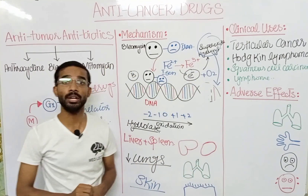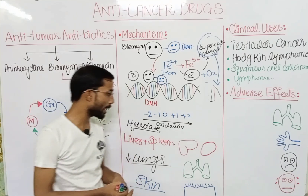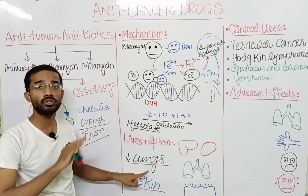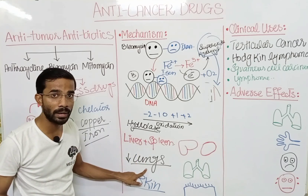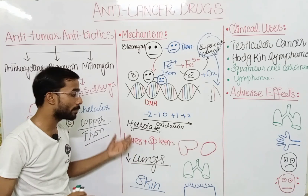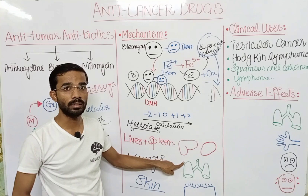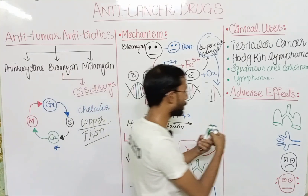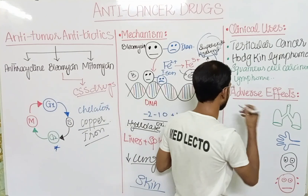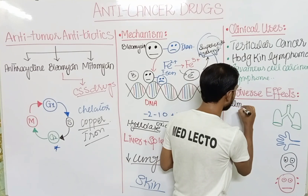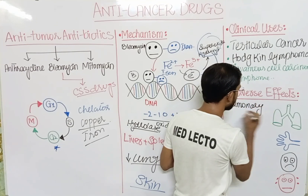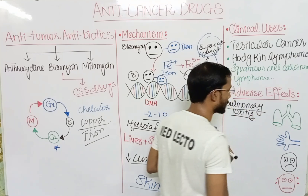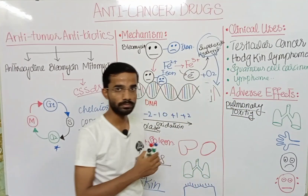Regarding adverse effects: as discussed, because of the low amount of hydroxylase in the lungs, there is low destruction of bleomycin, so bleomycin is specifically active on the lungs and causes pulmonary toxicity. Pulmonary toxicity is the most important adverse effect of bleomycin.